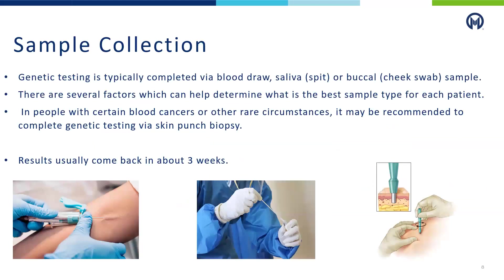There are a couple of options for sample collection. Genetic testing is typically completed via a blood draw, saliva, or buccal — also called cheek swab — sample. In certain cases where a patient has lymphoma or certain blood cancers, it may be recommended to take the sample via skin punch biopsy instead. Your genetic counselor will review this with you at your appointment to make sure you're getting the most appropriate sample and will coordinate how to obtain it, depending on if you have an in-person or virtual appointment. Once we receive the sample, results typically come back within three weeks.